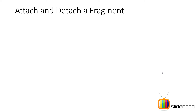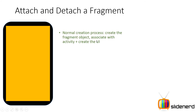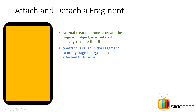Now let's talk about attach and detach — this is where we discuss the difference between the second and third object states of a fragment. Normally when you create a fragment, you create the object, associate it with the activity, and then create the UI. The onAttach lifecycle method notifies that the fragment has been attached to the activity. But transaction.attach simply creates the UI — it keeps the fragment object and its relationship with the activity intact while showing or hiding the fragment.